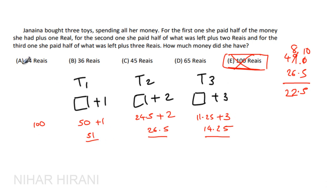So let's say she had 34 in the beginning. Now half of 34 is 17. So she is spending half plus 1, that means 18 on toy 1.